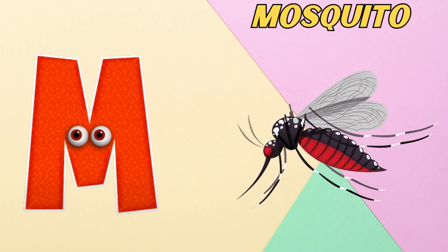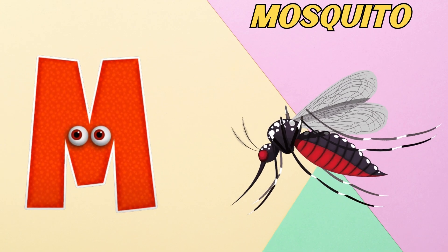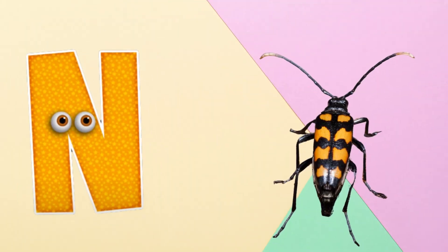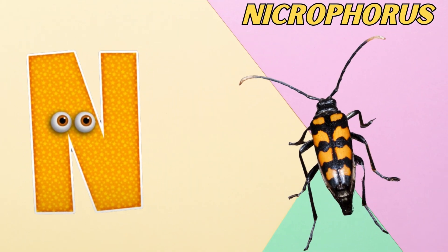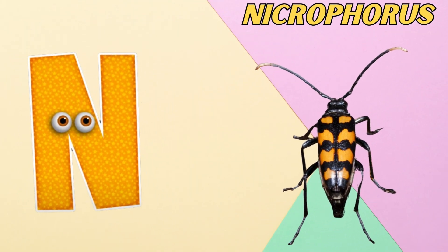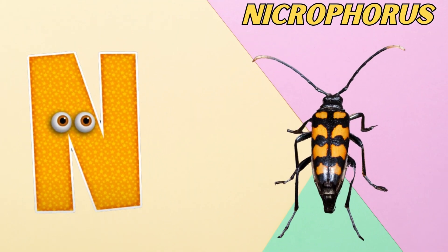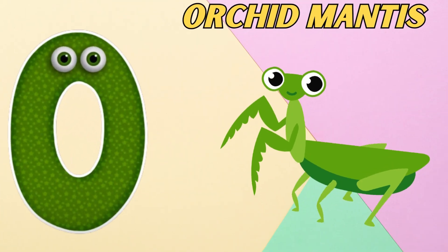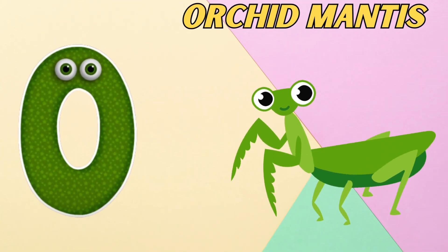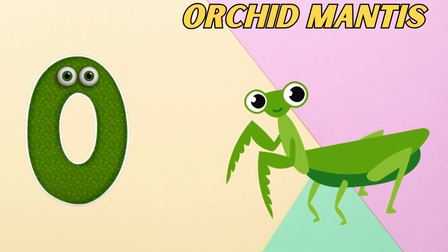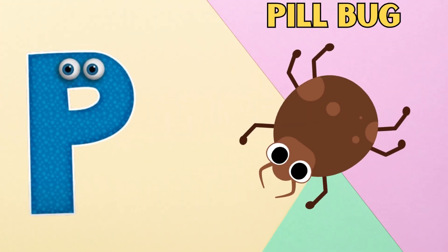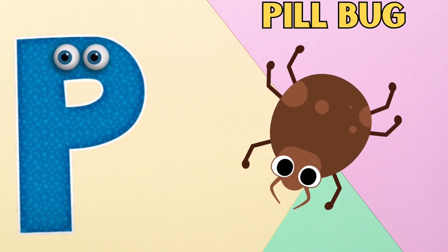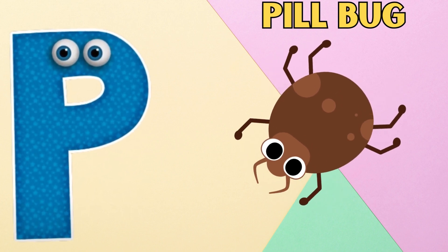M is for mosquito. m, m, mosquito. N is for necrophorus. n, n, necrophorus. O is for orchid mantis. o, o, orchid mantis. P is for pill bug. p, p, pill bug.